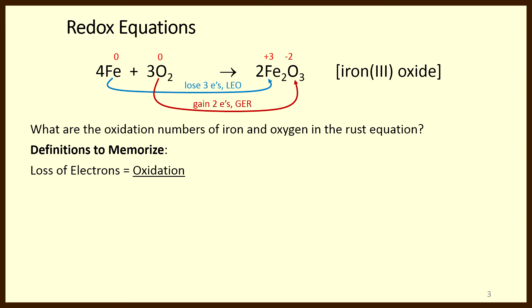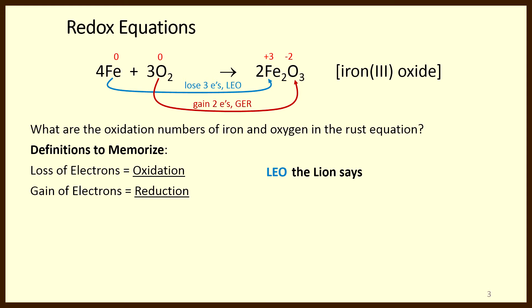Here are the definitions to memorize. A loss of electrons is oxidation — that's LEO. LEO the lion says a gain of electrons is reduction — that's GER. So: LEO the lion says GER. Loss of electrons is oxidation; gain of electrons is reduction.